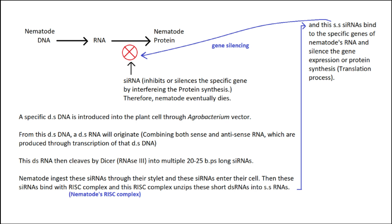These siRNAs then bind with the RISC complex — the nematode's RISC complex. The RISC complex unzips these short double-stranded RNAs into single-stranded RNAs. These siRNAs then bind to the specific complementary gene sequences present in the nematode's mRNA and silence gene expression or protein synthesis.